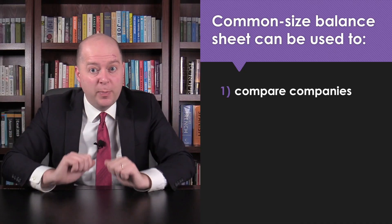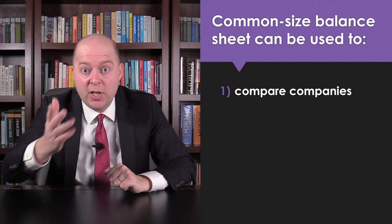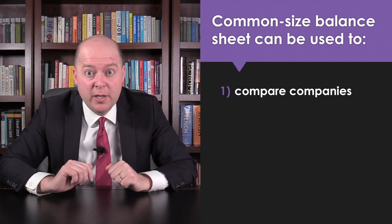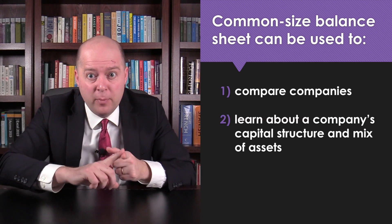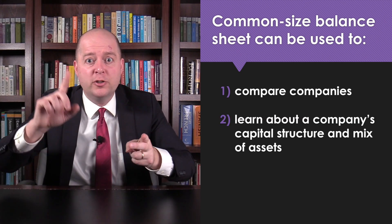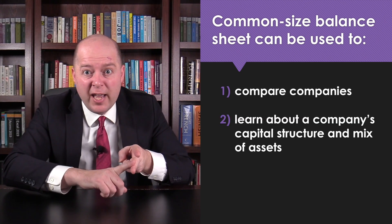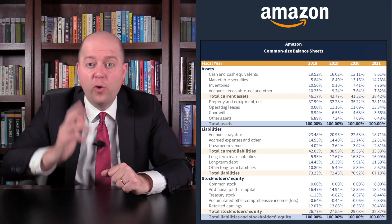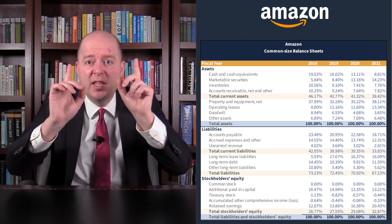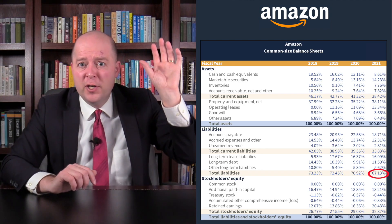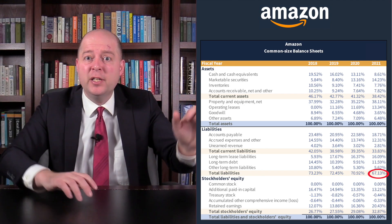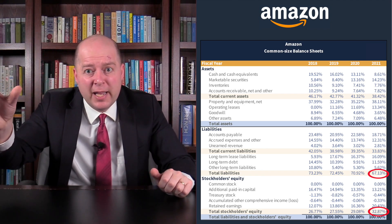But a common-sized balance sheet isn't just helpful for comparing companies. You can also use it to learn about a company's capital structure and its mix of assets. For example, we can see that two-thirds of Amazon's assets are funded by liabilities and one-third by equity.